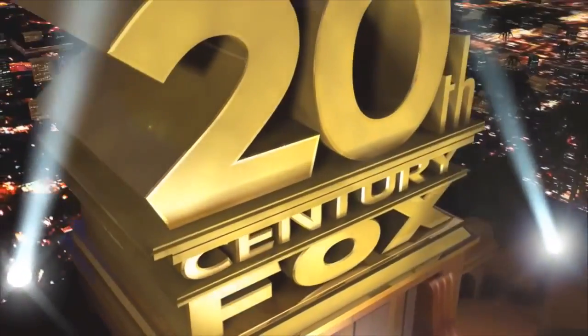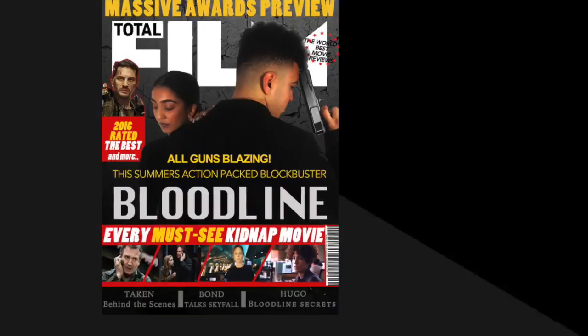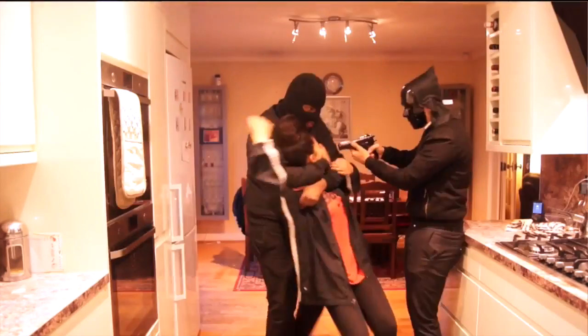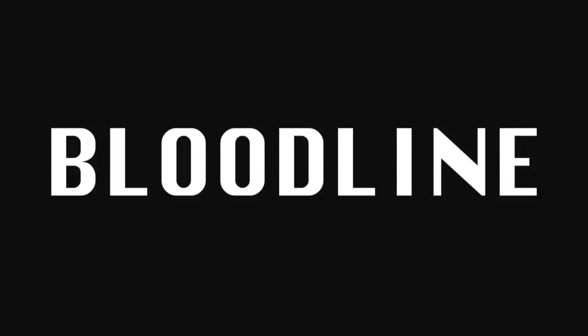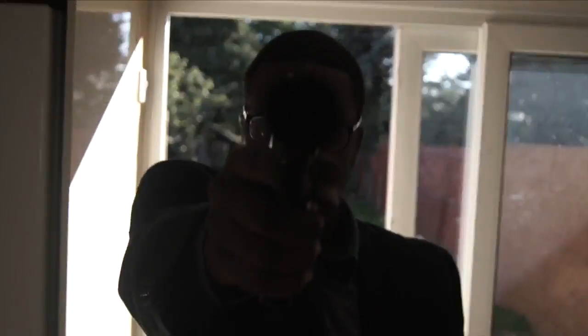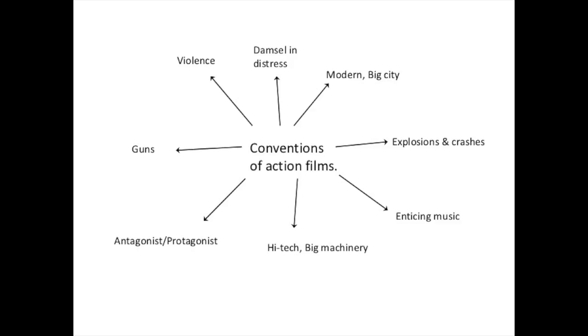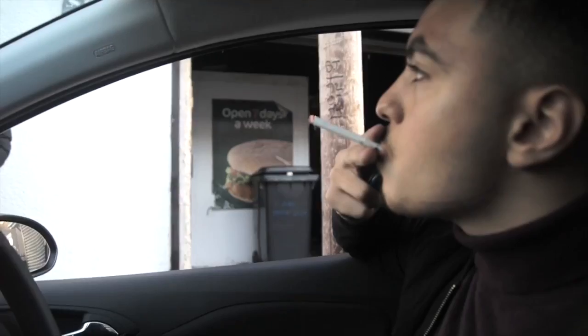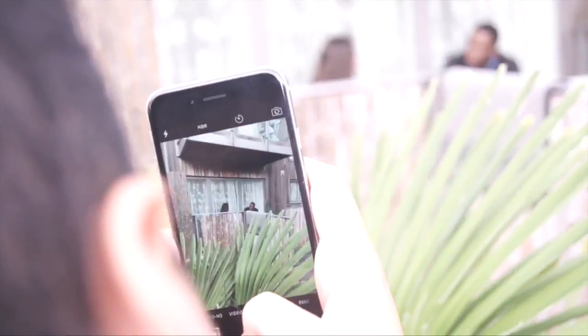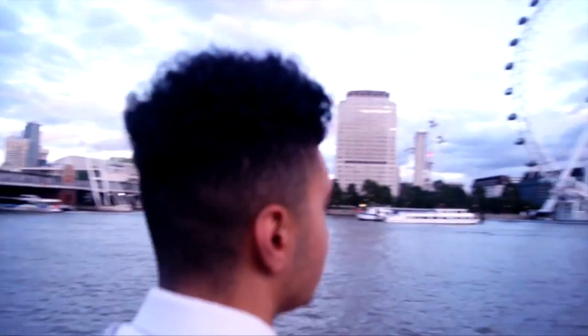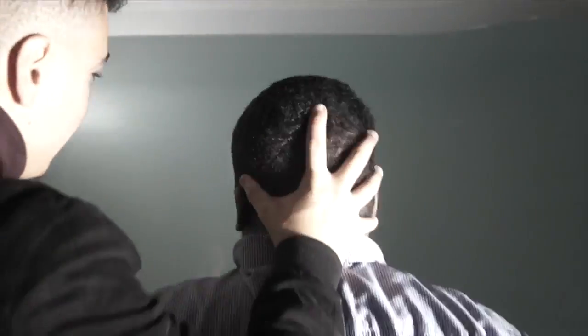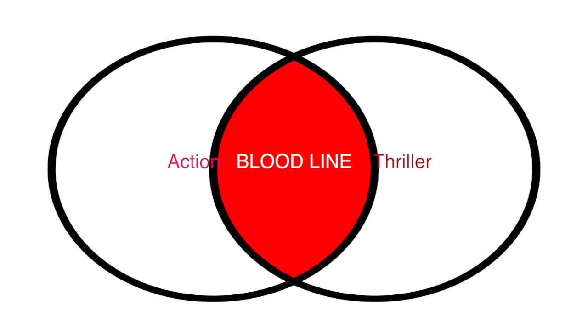I think that the combination of our main product and also our ancillary text was very effective. To start it all off, our main product called Bloodline — we looked into the creation of our teaser trailer. We also looked at all the conventions to take into consideration, so we decided to set our trailer in the city, which is a typical setting for a hybrid genre such as action/thriller.